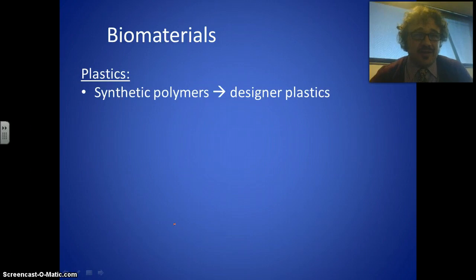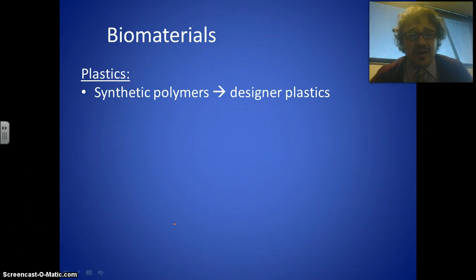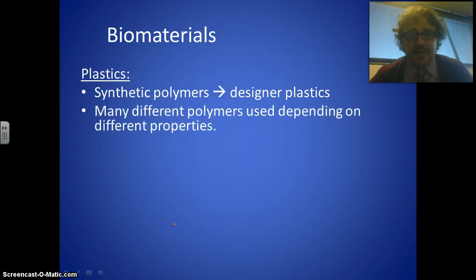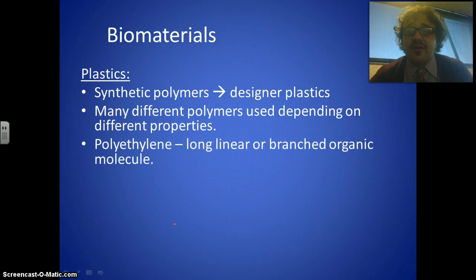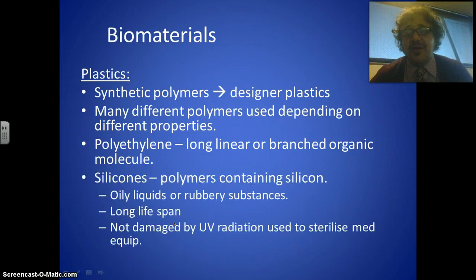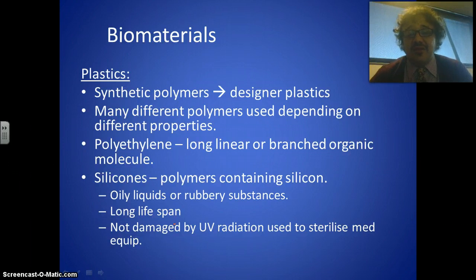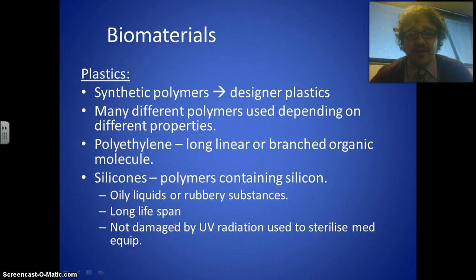Plastics are really where it's at right now — this is the golden age for plastics in biomedicine. We're talking synthetic polymers, long chains of molecules, and in particular designer plastics, meaning you can build a plastic to fit exactly what you need. There are thousands with different properties and strengths. Polyethylene is the main one — a long linear branched organic molecule. Then there are silicones, which are polymers containing silicon, generally rubbery substances when used as biomaterials. They have a very long lifespan — hundreds of years — and are not damaged by UV radiation, which we use to sterilize medical equipment.